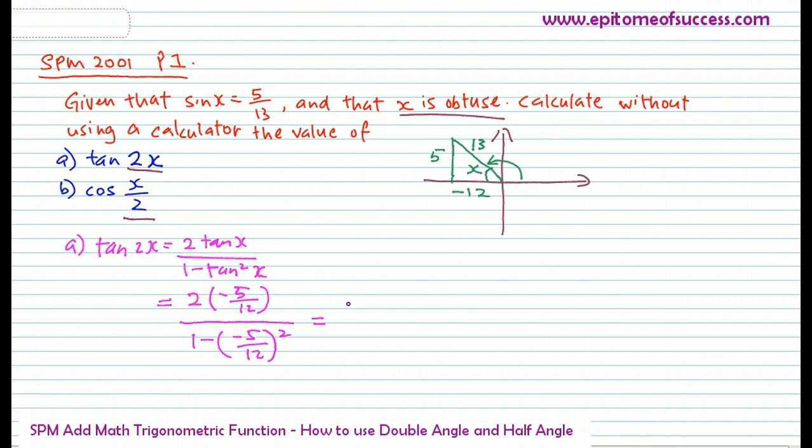Okay, so now, calculator time, that would give you negative 5 over 6 over 119 over 144, and negative 120 over 119. That would be the value of tangent 2x that you can calculate without using a calculator.